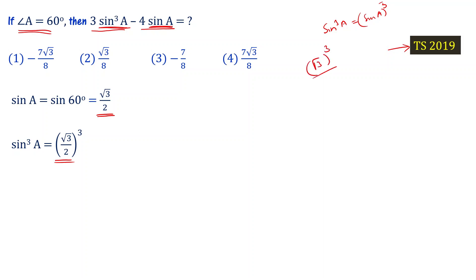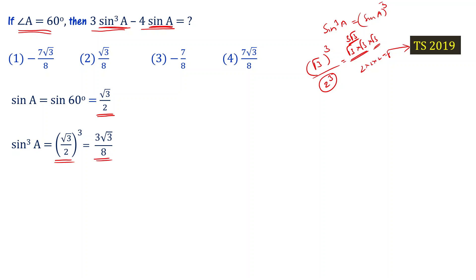Root 3 whole cube is equal to 3 root 3, so root 3 by 2 whole cube equals 3 root 3 divided by 8.